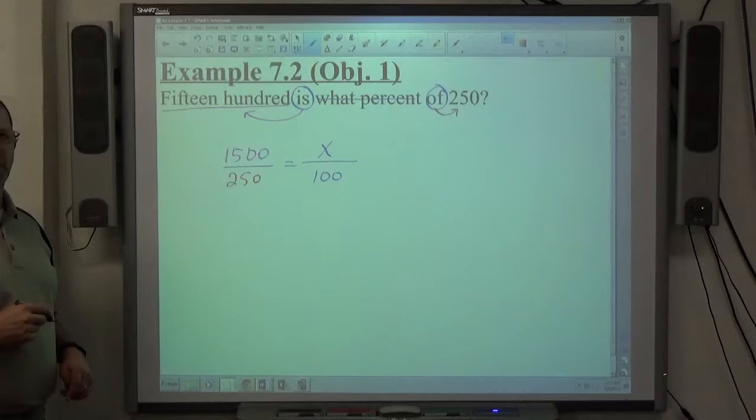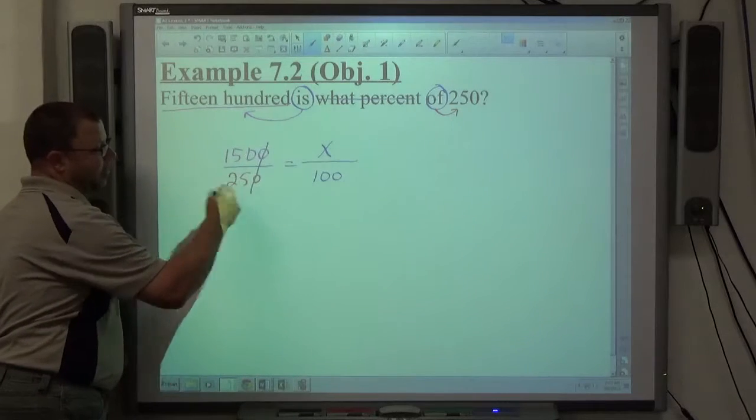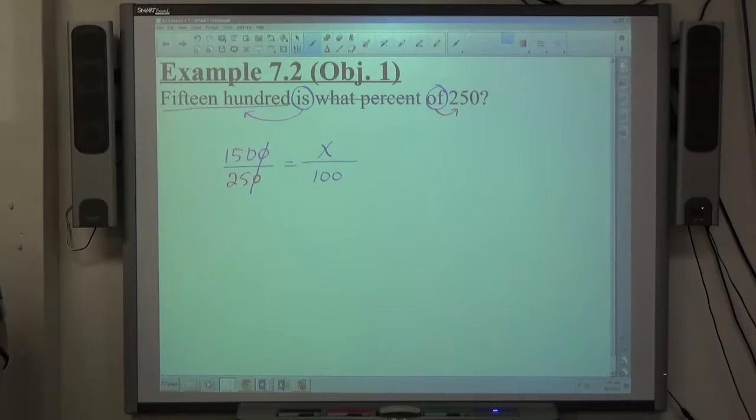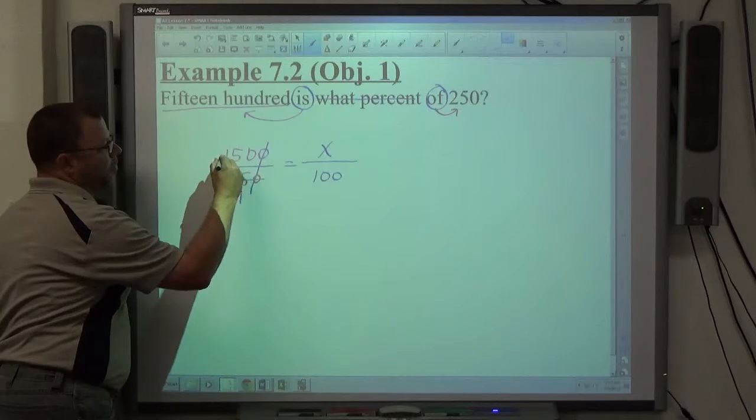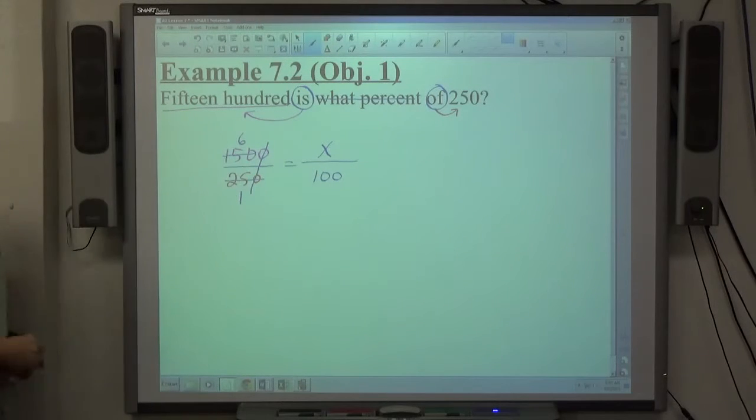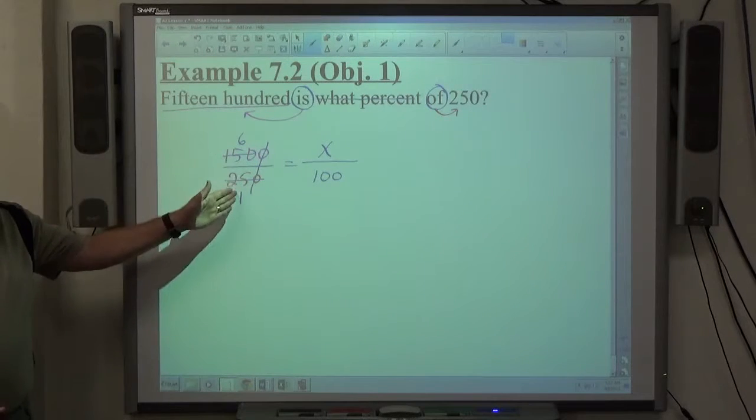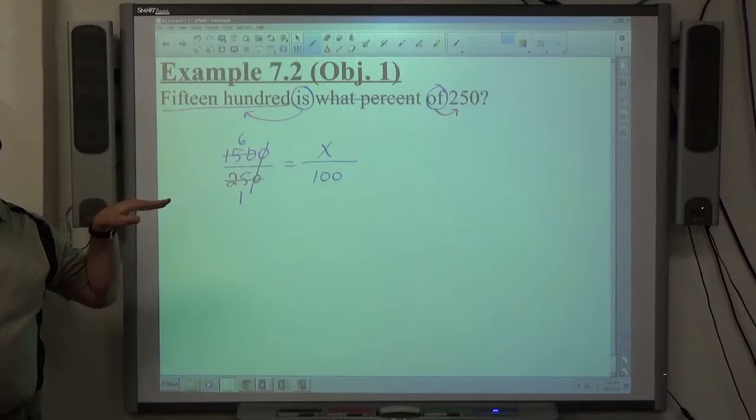1,500 and 250 both divide by 10, obviously. They also divide by 25. So that becomes 1, that becomes 6. Vertical reduction is legal. Horizontal reduction is legal. Take your pick.